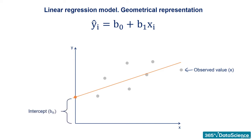B0, as we said earlier, is a constant and is the intercept of the regression line with the y-axis. B1 is the slope of the regression line. It shows how much y changes for each unit change of x.